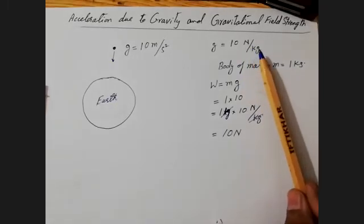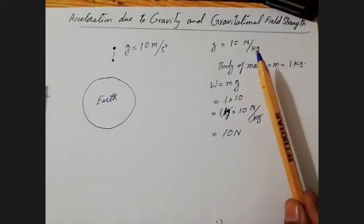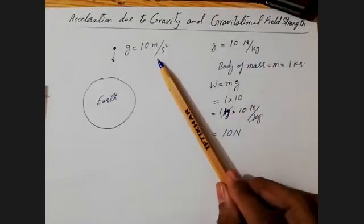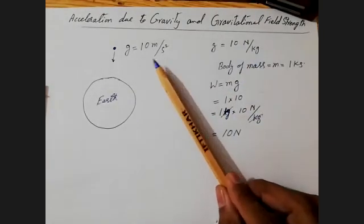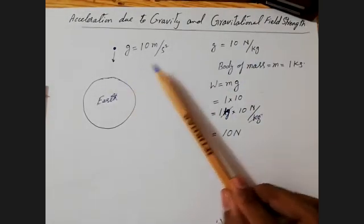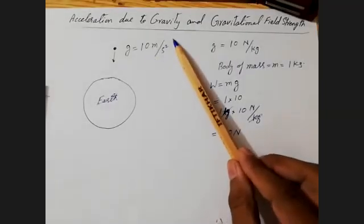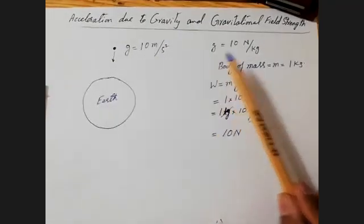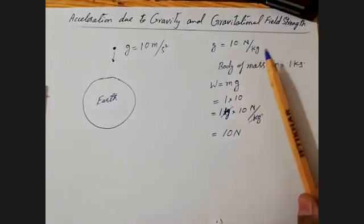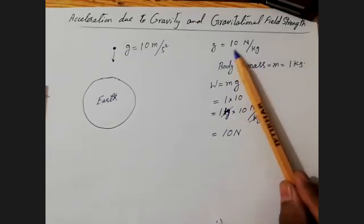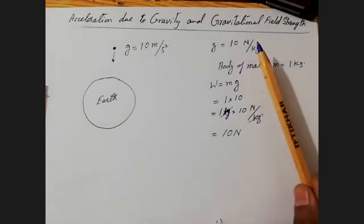In both cases, the value of small g is 10. But in the case of gravitational acceleration, we consider it as 10 meter per second squared. In the case of weight, we take it as 10 Newton per kg. Thank you.